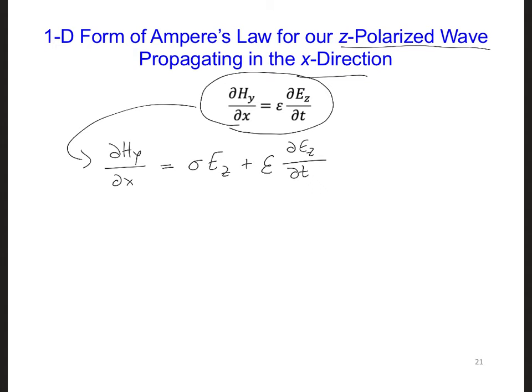Now when we applied central differencing to the free space version of Ampere's law in module FDTD2, we centered the partial derivatives around n plus one-half and also location i. Now we're going to apply central differencing to this new form of Ampere's law in the same manner. So we're again going to center the partial derivatives around n plus one-half and i.